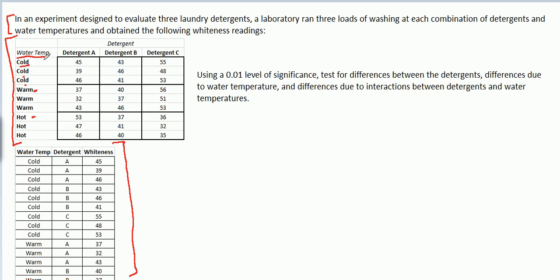For each laundry detergent, we're going to wash a load of laundry in each of the water temperatures. And not only that, we'll repeat that a few times. So let's just take one example and look at it carefully. We have detergent A and cold water. What we do is we do three separate loads with detergent A and cold water, and these are the results of those three loads. This represents a combination of detergent and water temperature, and here are the data we collected at that combination.